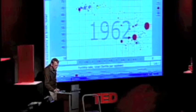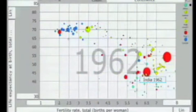Every bubble here is a country. This country over here, this is China, this is India. The size of the bubble is the population and on this axis here,